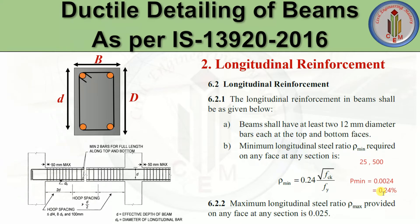For maximum longitudinal steel ratio, p_max provided on any face at any section is 0.025, which converts to 2.5%. So the maximum percentage of longitudinal reinforcement shall be 2.5%. The minimum percentage depends on the characteristic strength of concrete and steel, but the maximum is fixed at 2.5%.